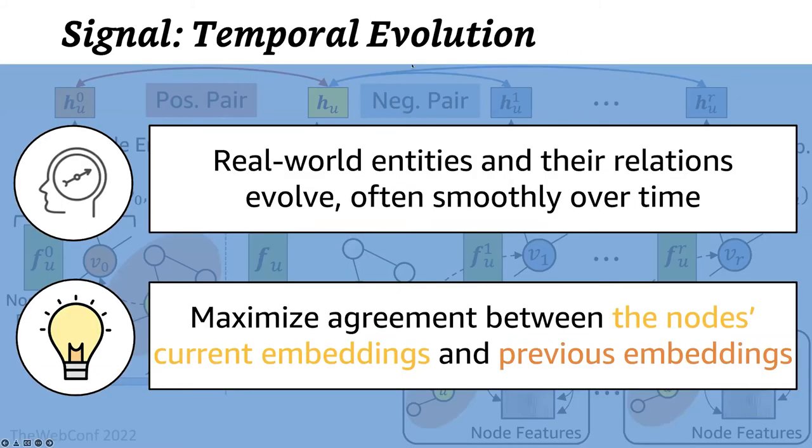Now we extend the problem setting to time-evolving graphs where new events continuously arrive over time. As entities interact with each other, their characteristics and their relations with others may change over time, and such temporal changes normally occur smoothly. Therefore, edges of a node observed across a range of time spans can provide related temporal views of the node in terms of its connectivity pattern. So to utilize this temporal smoothness, we maximize the agreement between the current embeddings of a node and its previous embeddings.